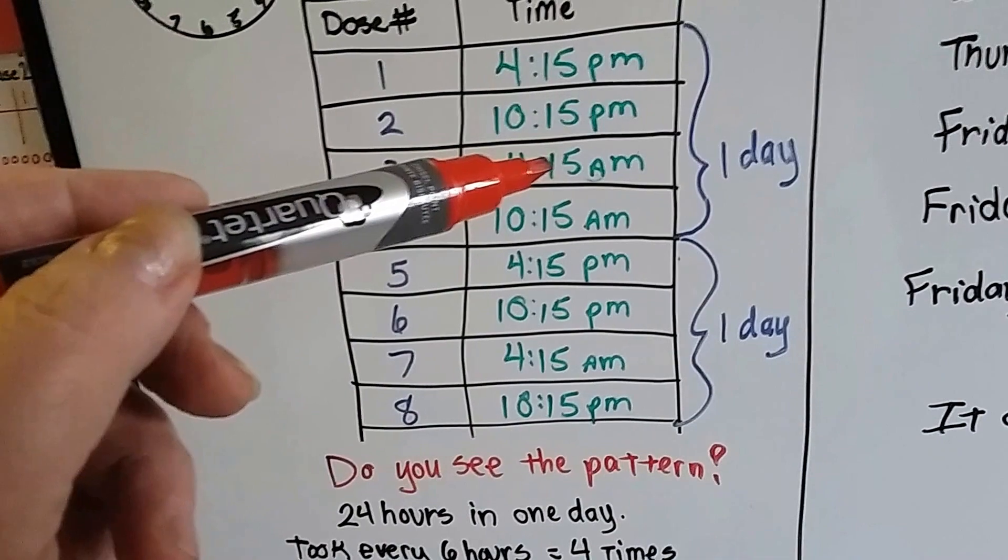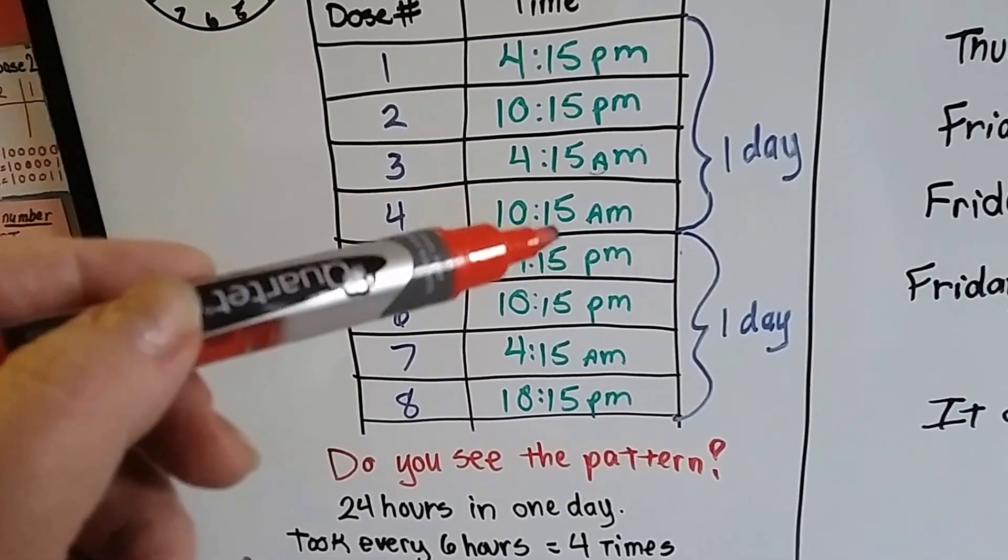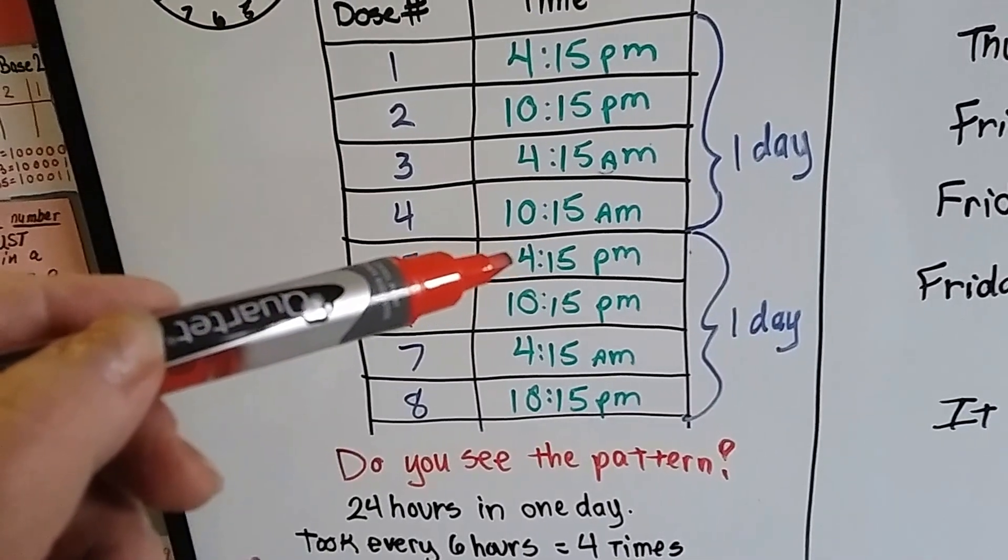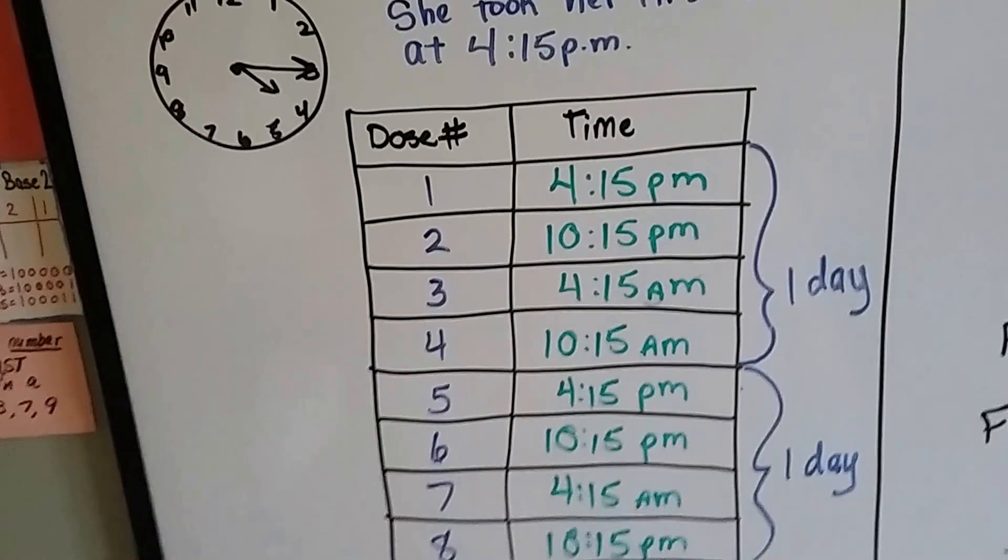When she was at 10:15 p.m., six hours later was going to bring her into the a.m. See, when she was at the a.m. and six hours went by, it was going to jump to the p.m. because it went past the 12. See, making a table is one of the easiest ways to follow elapsed time.